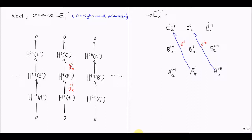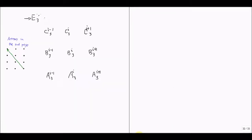Now let's first look at the exactness at H^i of B. Since B superscript i sub 2 is a cohomology here, the exactness at H^i(B) will be equivalent to B superscript i sub 2 being equal to zero. To show that B superscript i sub 2 is zero, we need to look at the third page. In the third page, there will be no arrows connecting any of these nine objects, because the arrows in the third page go three steps up and two steps left. As a result, the sequence will stabilize after the third page.